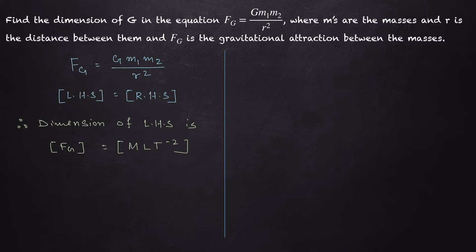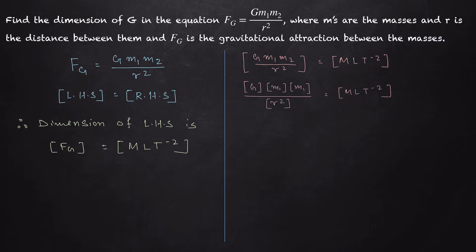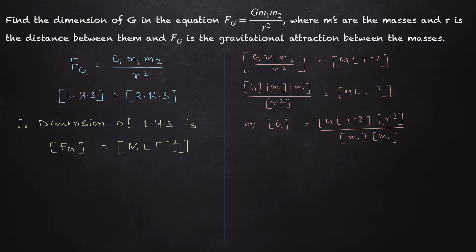The right-hand side is G·m₁·m₂ / r², and its dimension must also equal MLT⁻². Therefore, the dimension of G must equal MLT⁻² times r² divided by the dimensions of m₁ and m₂. Here r represents length, so the dimension of r² is L². And m₁, m₂ are masses, so the dimension of m₁·m₂ is M².